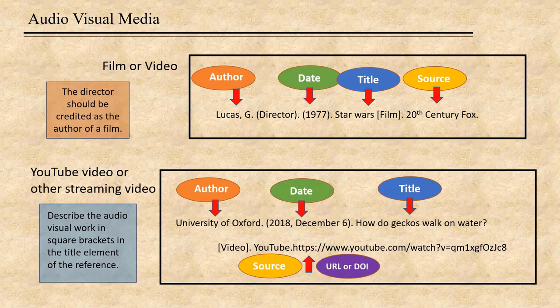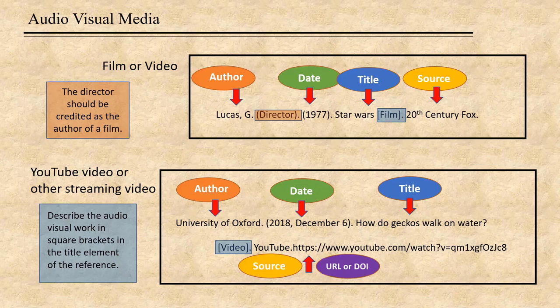What about films or media? In the case of a film, the director should be credited as the author, but designate them as 'director' in parentheses after their name. After the title, which is in regular font, put the word 'film' in square brackets, followed by a period, and the source information for a film is the studio. For a YouTube or other streaming video, put the word 'video' in square brackets, followed by a period, after the title.